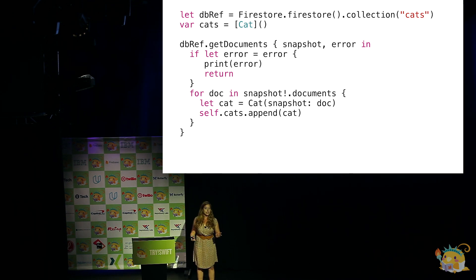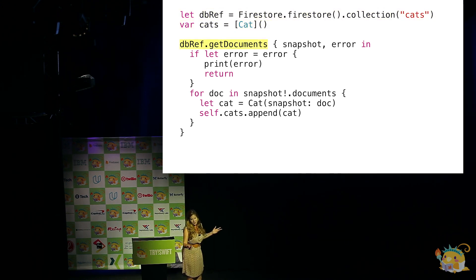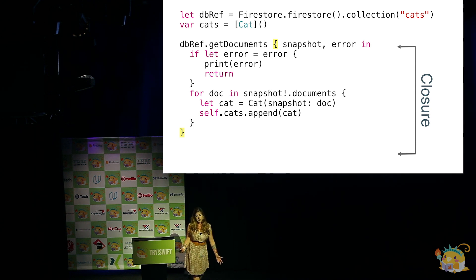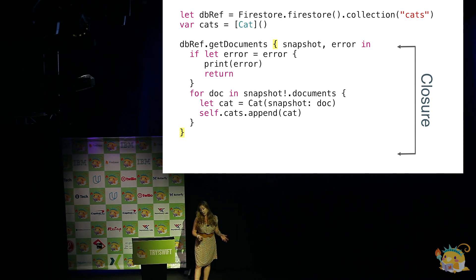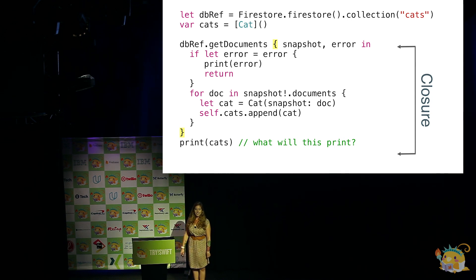In order to query my documents, I start by getting a Firestore instance, then I get the collection 'cats'. This is where, if I wanted to do some sort of special query — maybe order by timestamp or look at just the ones from a specific user — I would do that. But right now, I'm just doing a query of the entire cats collection. Then I call getDocuments, which has a completion handler passing a snapshot or an error, each as optionals. If this is my closure, and I iterate through all my cat documents and create a cat object out of them and make an array of cats — what is this going to print? Because it's outside of my closure, it's just going to print an empty array of cats.